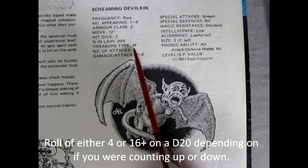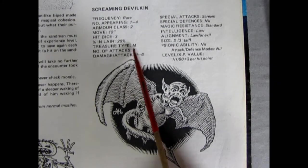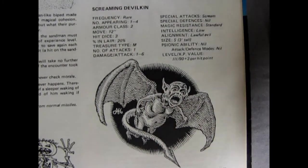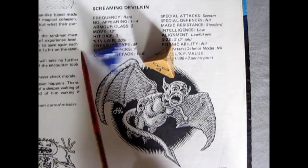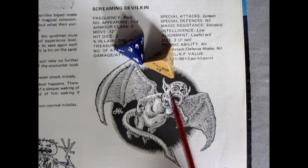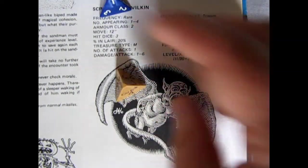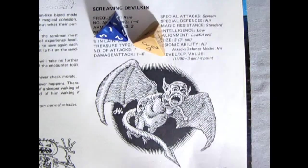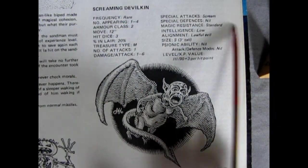The treasure type is M, which ends up being two to eight gold coins. So that of course would be 2d4, because it's a value of two to eight. So if I just roll these, our little creature here is going to have five gold coins in his lair, if you encounter him in the lair. Now if you encounter him somewhere else in the dungeon, he's not going to have those coins around.